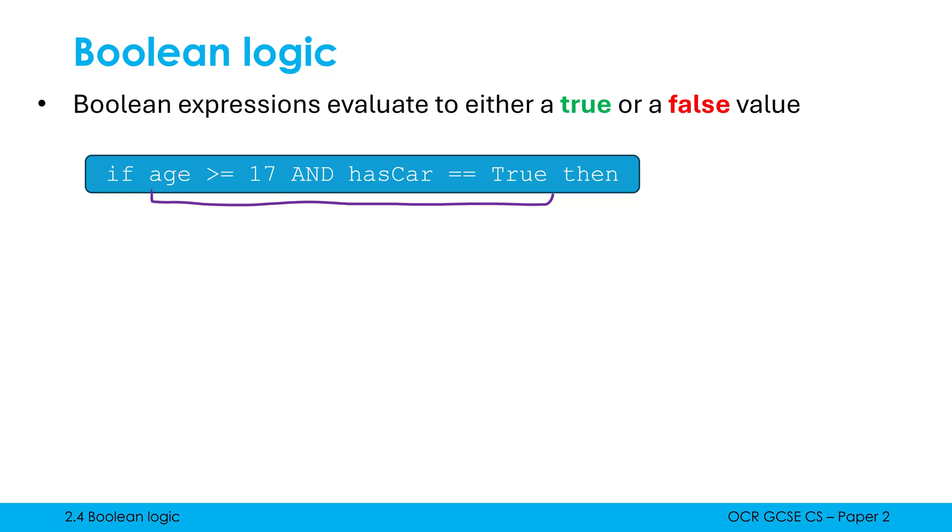But within it, I've also got another two Boolean expressions because to the left of the and operation, I've got a Boolean expression. Age can either be greater than or equal to 17 or not greater than and equal to 17. Likewise, has car, assuming has car is a Boolean variable, is either going to be true or false. Therefore, these are both Boolean expressions as well.